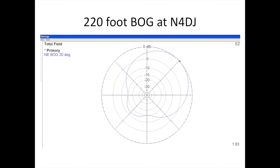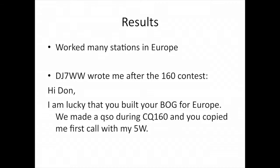Now this is a plot of my European bog. It was 220 feet long running northeast southwest. The elevation angle is 20 degrees. This was a very, very good antenna in my opinion. Now the results of my 220 foot bog pointed toward Europe resulted in many stations in Europe in both the ARRL and the 160 meter contest. In fact, after the 160 contest, DJ7WW wrote to me, 'Hi Don, I'm lucky you built your bog for Europe. We made a QSO during the CQ160 and you copied me first call with my 5 watts.' I thought that was nothing short of fantastic.